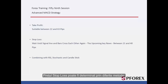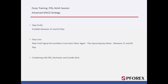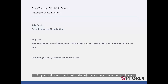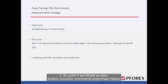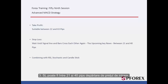Stop loss price can be determined with different methods: (1) SL can be placed on the spot where the signal line passes the bars again; (2) SL can be specified based on the analysis of future major calendared news; (3) SL can be 21 to 40 pips away from an entry price.